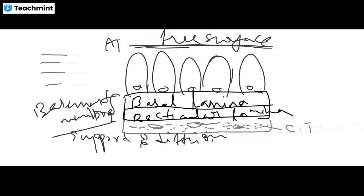The apical free surface is the top surface, and the basal surface is the surface that rests on the basement membrane below.